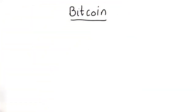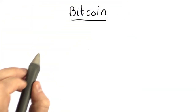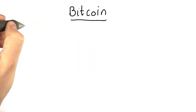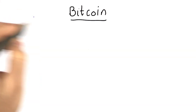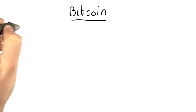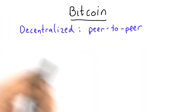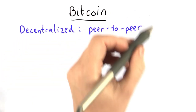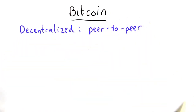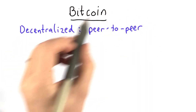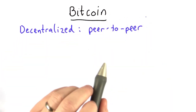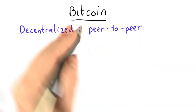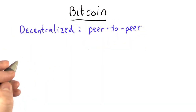The last thing I'm going to talk about this unit is Bitcoin, which is a way to do digital cash in a completely decentralized way. This means that there's no bank, there's no trusted authority, but everyone who participates in the protocol is considered a peer, and they all have an equal say as to what's valued and what's not.